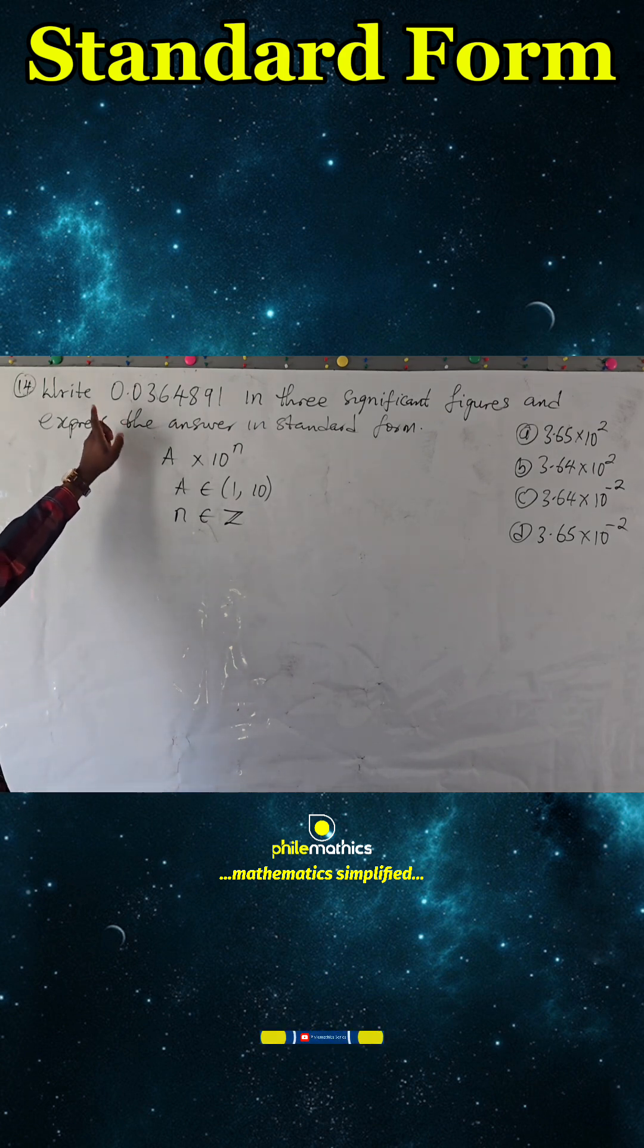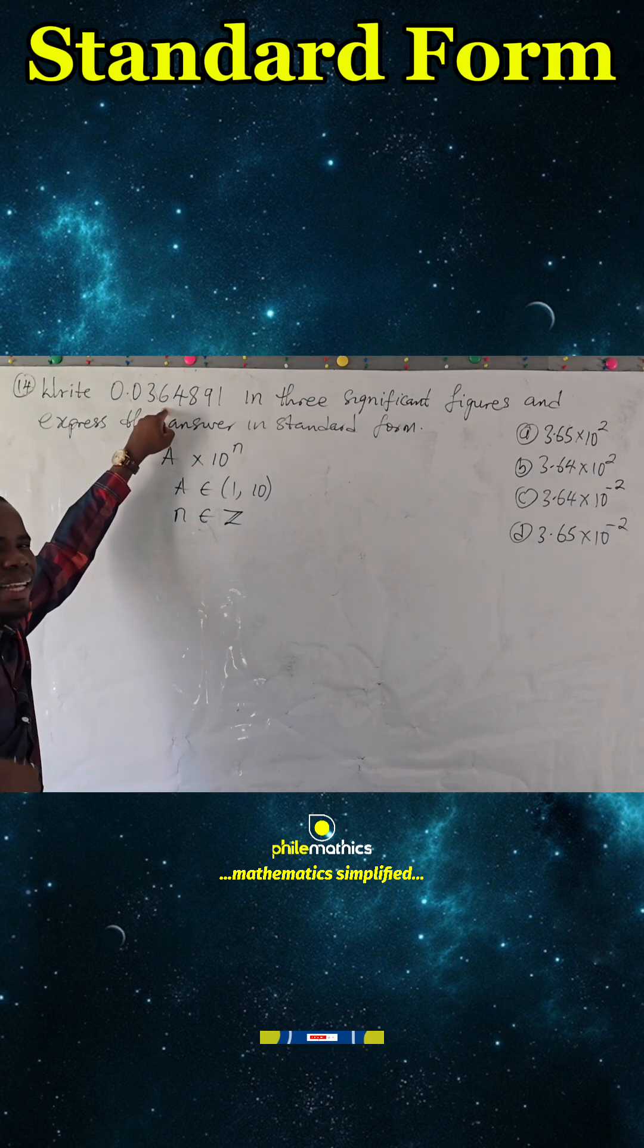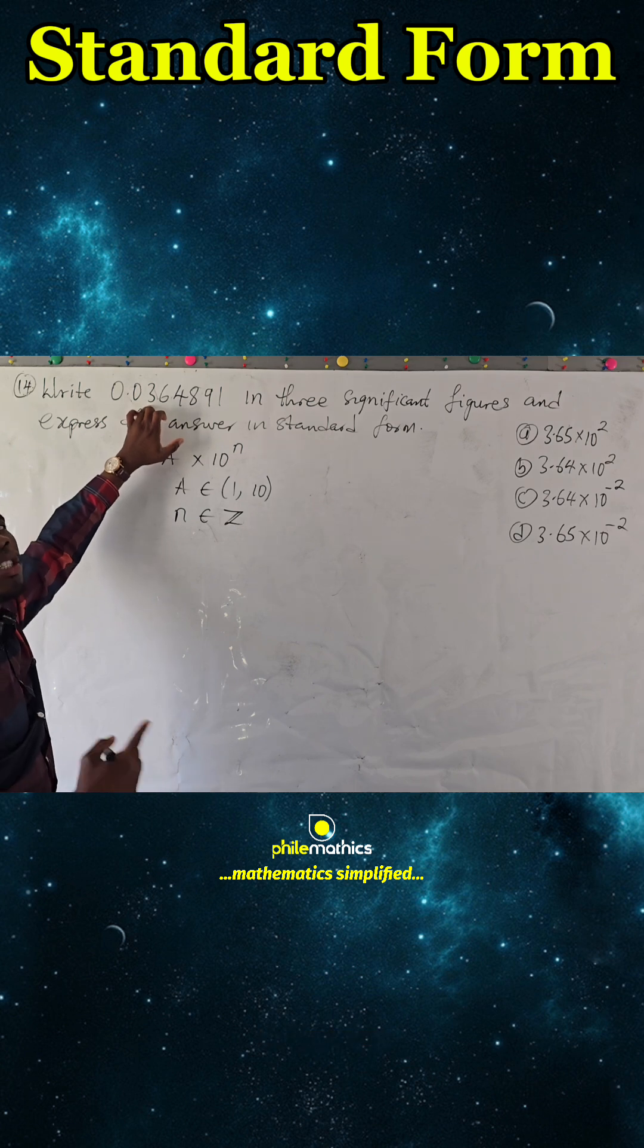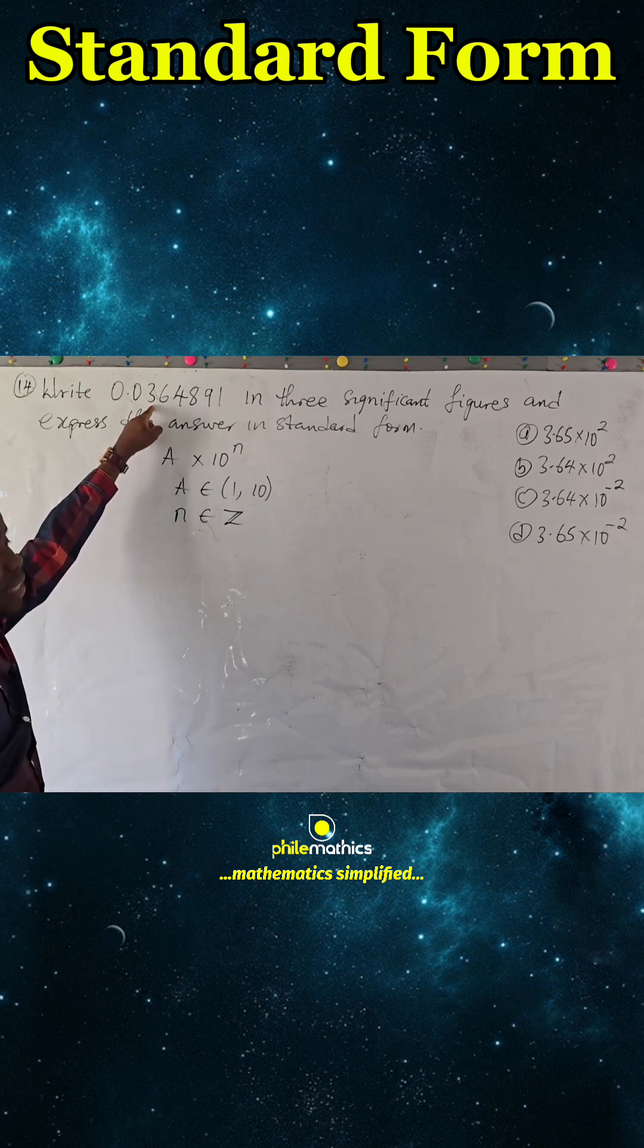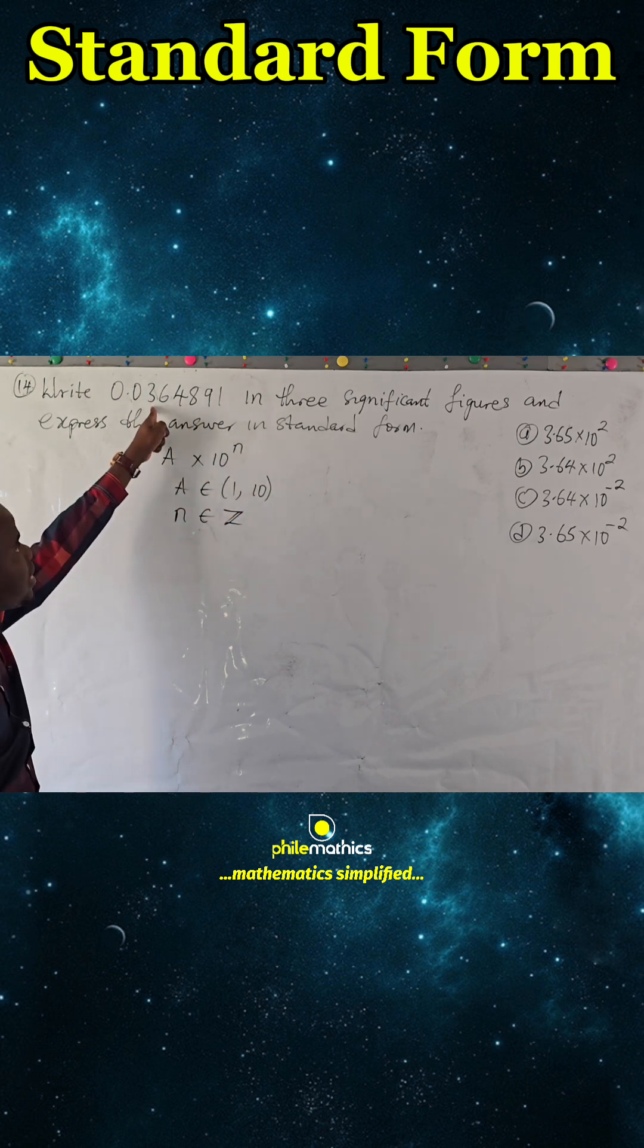To write this in three significant figures, by significant figure we mean the first digit that is non-zero. The first significant figure is the first digit that is not zero, which is 3. From this 3, we start counting significant figures: first, second, third, fourth, fifth, sixth.